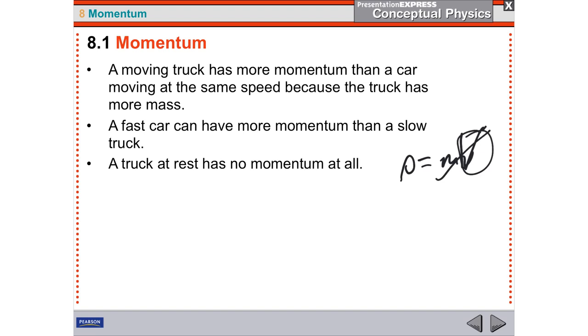But if it has momentum at all, if it has a number that's momentum, then you have to have a moving object. A truck at rest has no momentum. A truck moving would have the momentum of its speed times its kilogram weight.